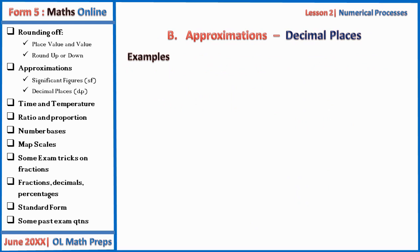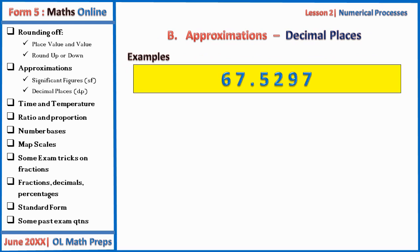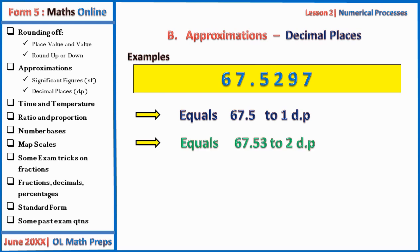Let's take some examples on decimal places. Express 67.5297 to one decimal place. The first decimal place is five. The two after it will not affect it, so to one decimal place we stop at the five — giving us 67.5.